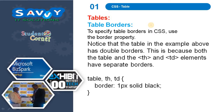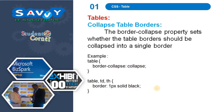Now the table borders. To specify table borders in CSS, use the border property. Notice that the table in the example above has double borders. This is because both the table and the th and td elements have separate borders — so table, th, and td each have a border of 1px solid black line. This is exactly what the first example demonstrates.